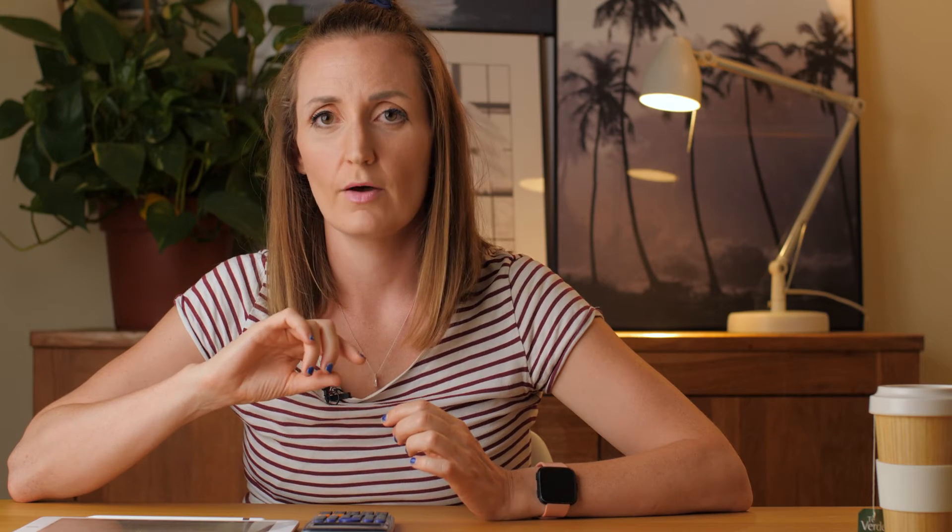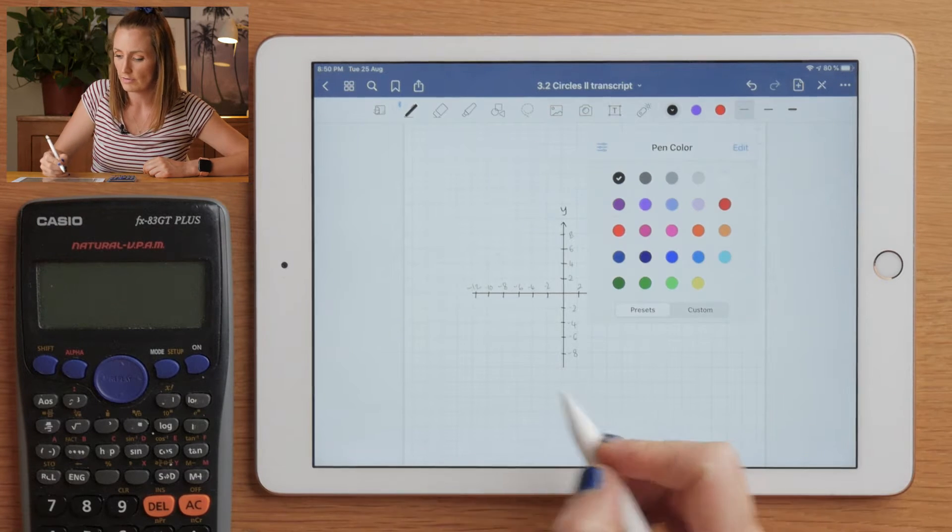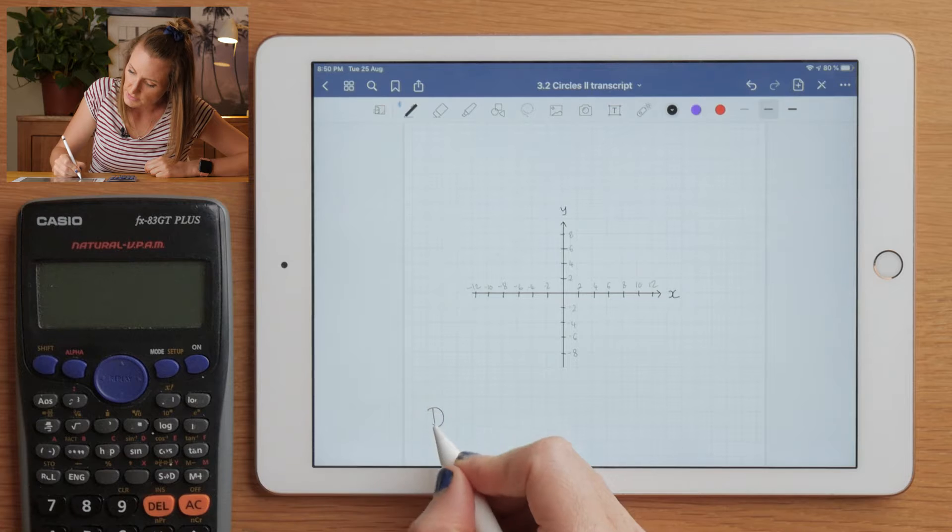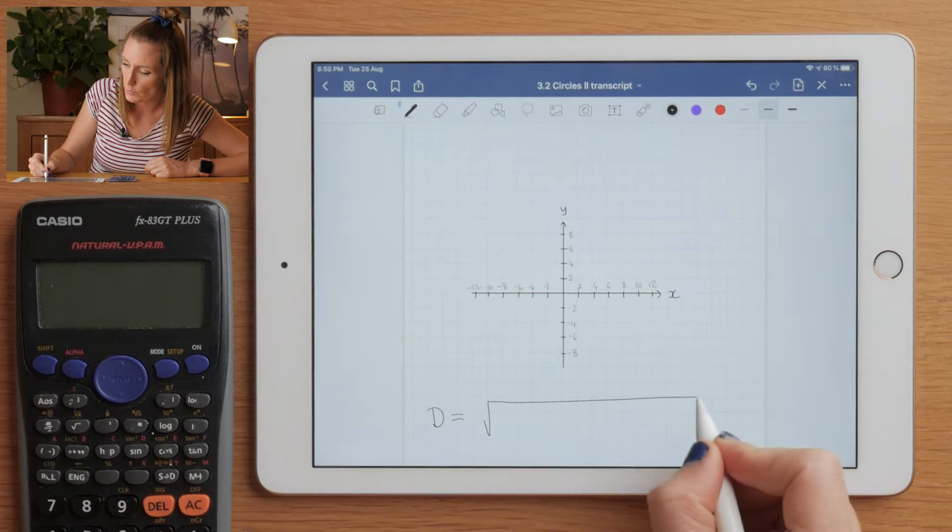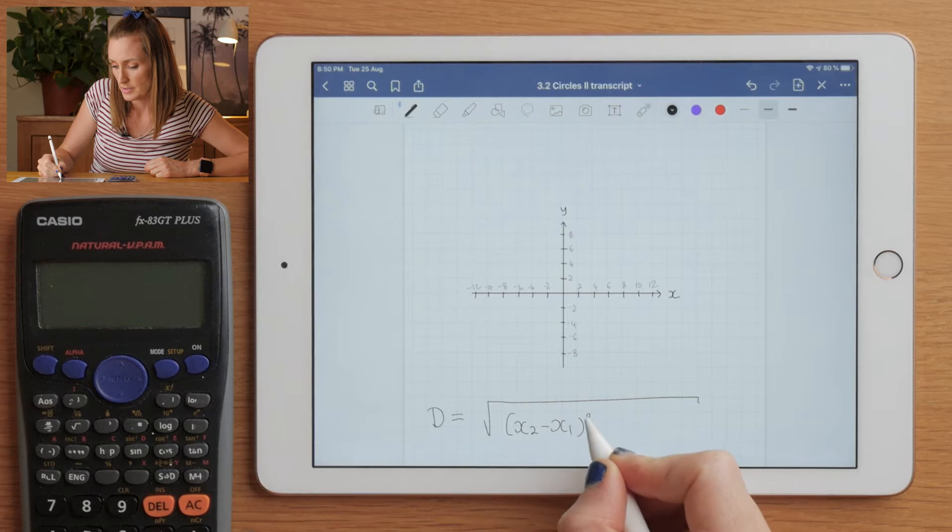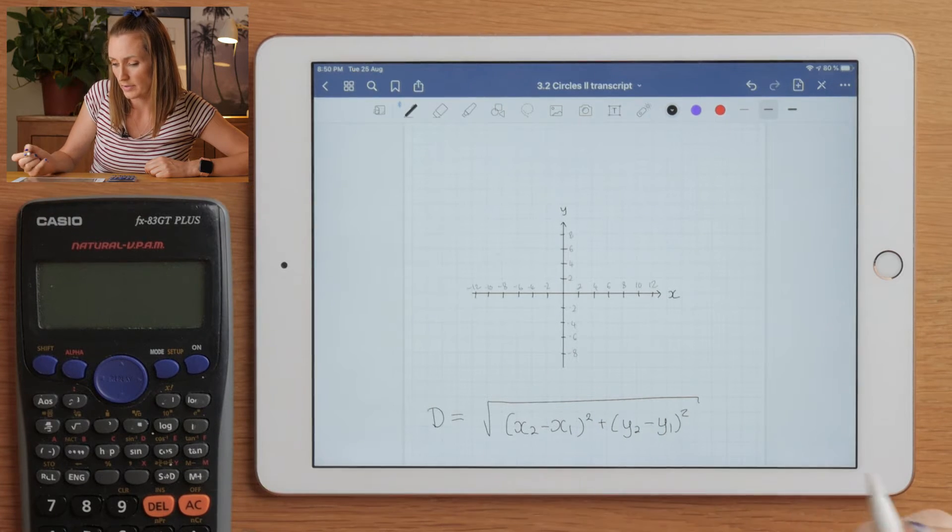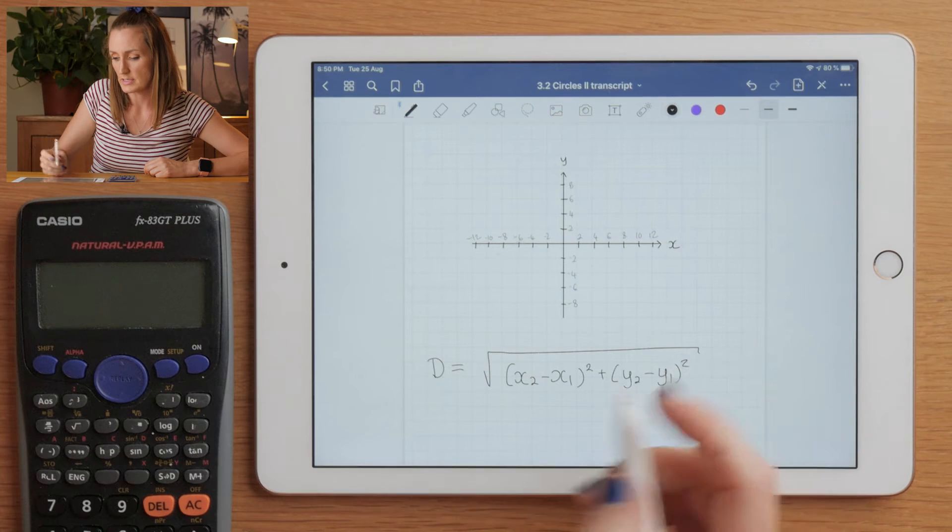Now we can use that fact together with the distance formula you've already learned in the line. If you don't know how to find the distance between two points, check out the line series, but I'm going to refresh it here for you. The distance between two points is the square root of (x₂ - x₁)² plus (y₂ - y₁)².